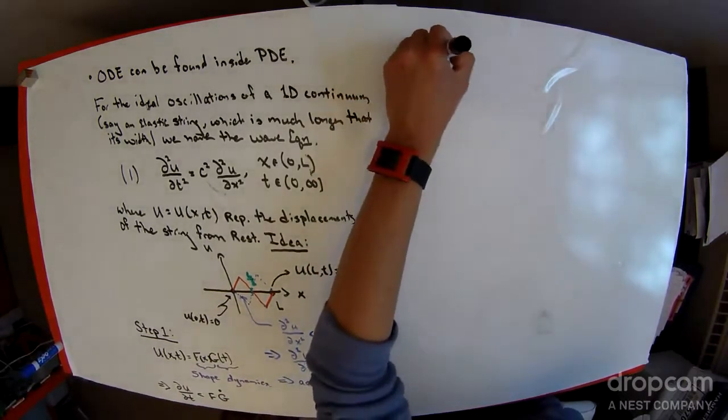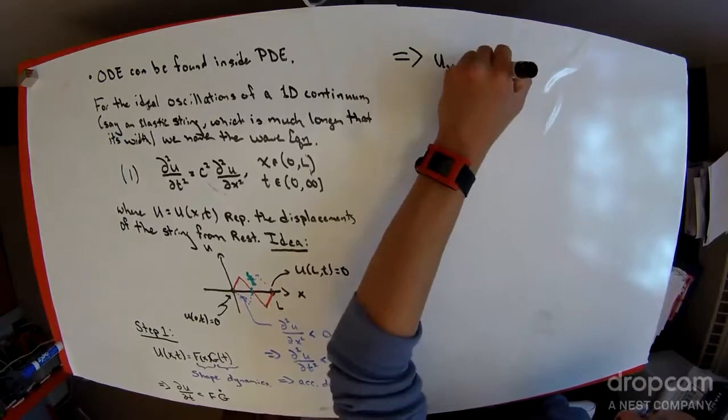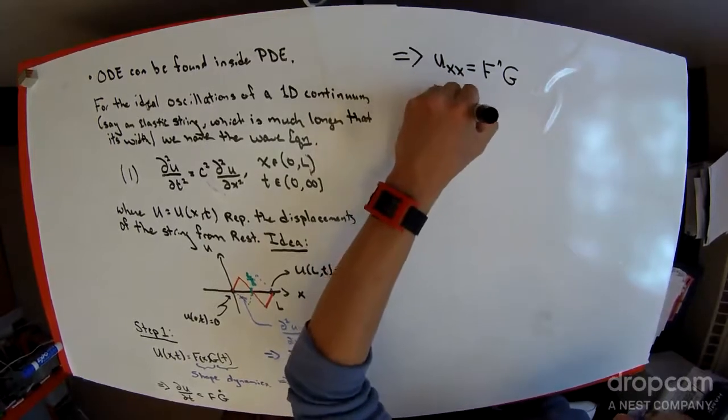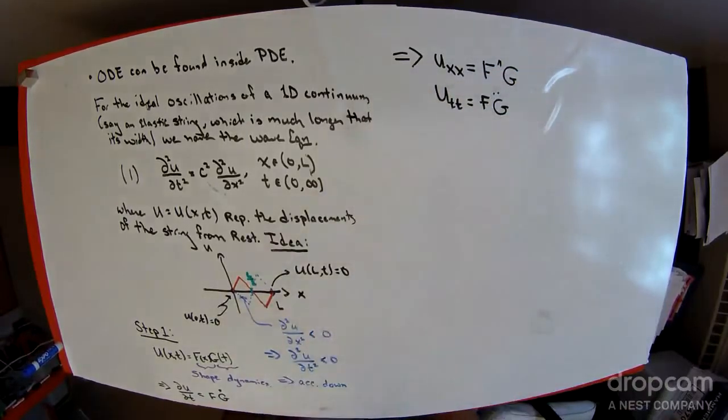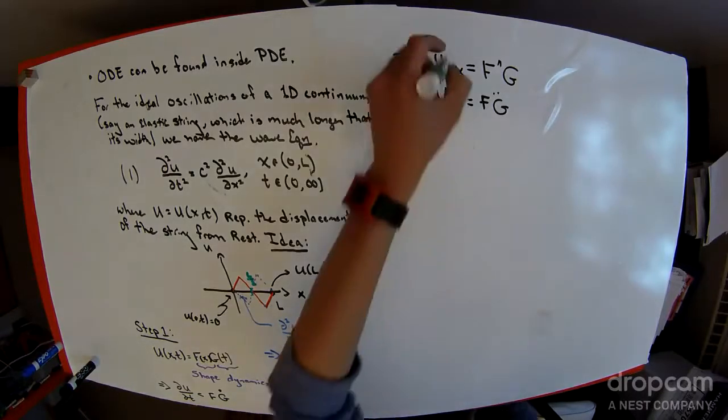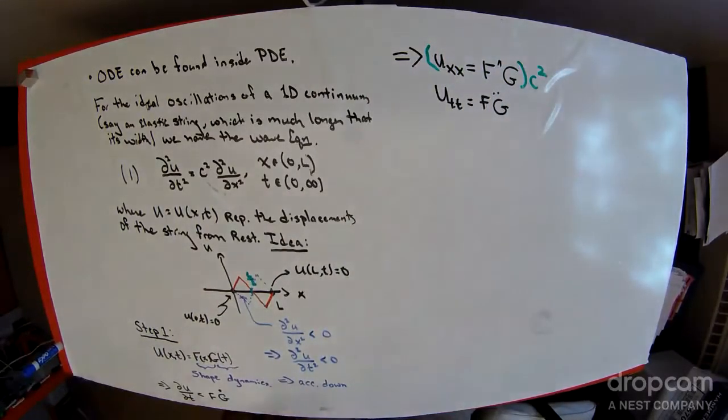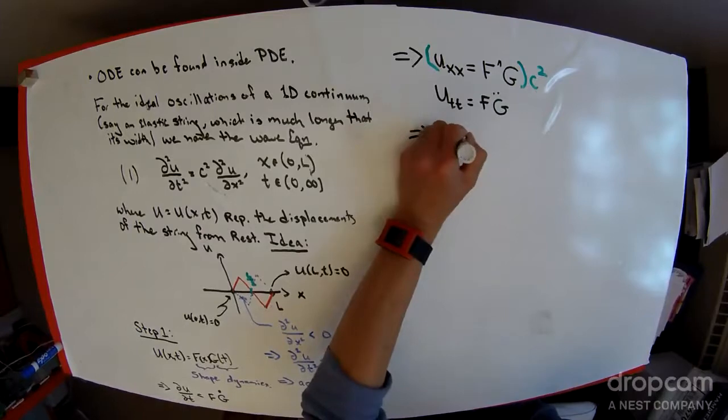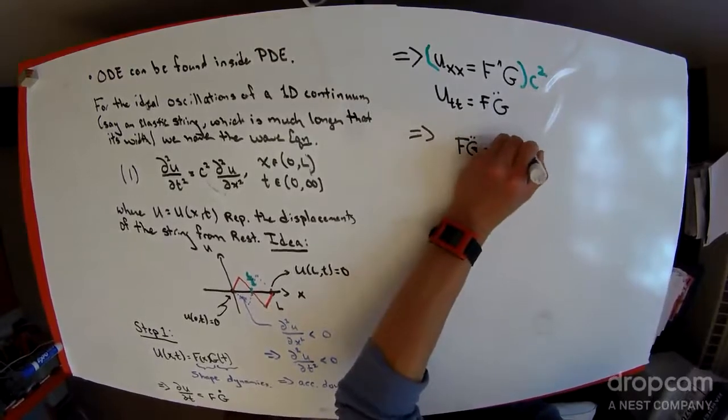If I look at the partial of u with respect to time, when the time derivative hits, the f function won't feel anything, but the g function will feel a time derivative, so it's just f and then g with a time derivative, which we'll represent with a dot. At the end of the day, u_xx looks like two derivatives on the f function and no derivatives on g, and u_tt is no derivatives on f and two time derivatives on g.